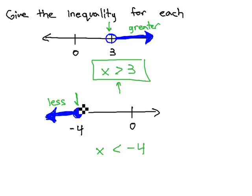Notice this graph has a closed dot. Because it's a closed dot, it means we can actually hit the negative 4. We want to show this with an or equals to line underneath the inequality. This graph is representing x is less than, or equal to, negative 4.